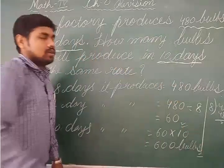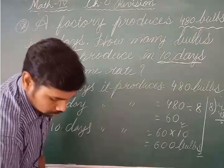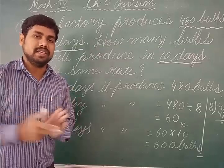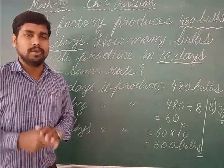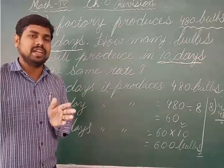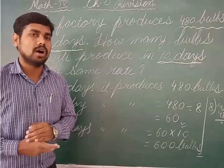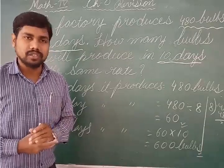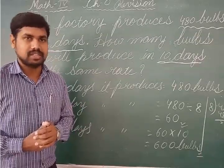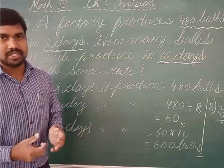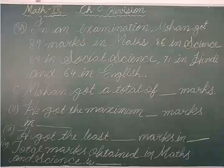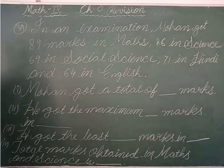This is how these types of word problems are solved. When the price of many things is given and you want to find for one, you divide. When the price for one is given and you want to find for many, you multiply. This process is called the unitary method. We will learn more about it in the class 4 unitary method chapter. This is just the revision.